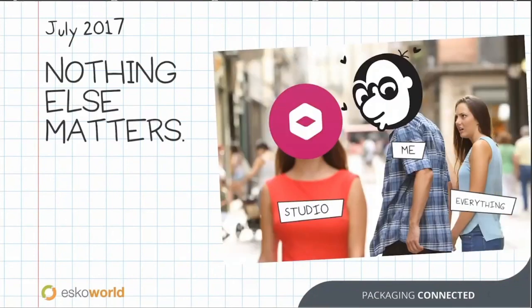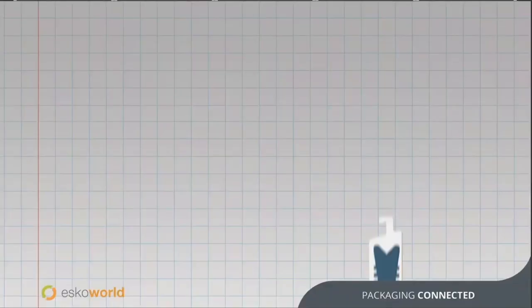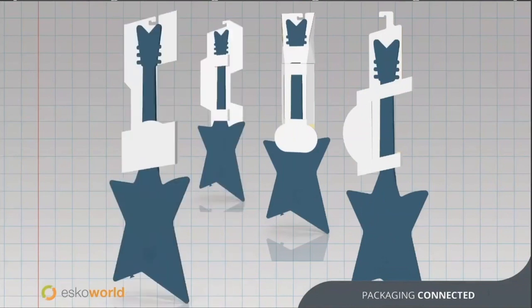July 2017 — nothing else matters. I'm spending half my days at work learning Studio. It's one thing to work on packages I've already completed, like all the Meccano stuff, but what about new projects where the stakes are a little bit higher? Enter the Paper Shredders — a product line of toy instruments where the feature was that it was super flat and could trigger simulated guitar playing. It needed to communicate a lot of information, like track lists. This was a great way for me to work with the plastic toy CAD and the paper structural CAD and put those files together.